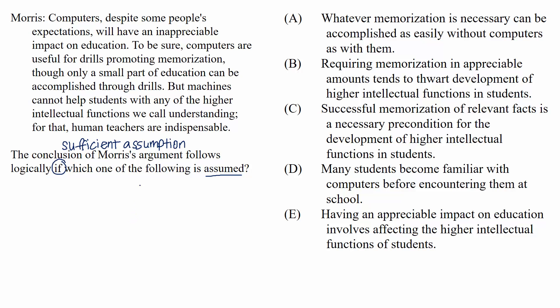The answer will be a claim that ensures a connection from evidence to conclusion. The wrong choices will be claims that don't allow the conclusion to follow from its support, either because they're not relevant, or maybe they're a necessary assumption but not a sufficient one, some reason like that. Pause your video now if you'd like to try this question on your own, otherwise let's move on to the explanation.